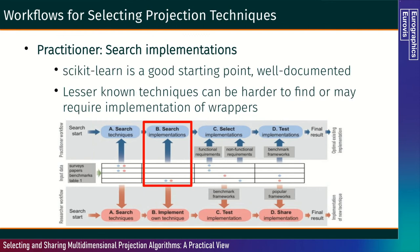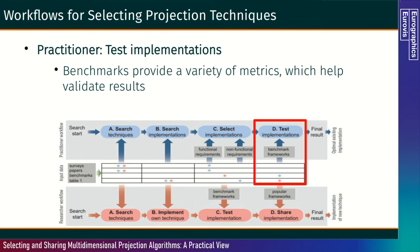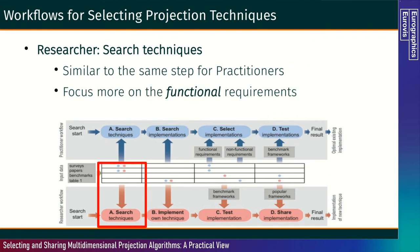Practitioners then search for implementations. Scikit-learn is usually a good starting point — it has many implementations and is very well documented, but lesser-known techniques can be harder to find or may require implementation of wrappers. Then they need to select implementations; surveys provide information to check if requirements are met, though documentation quality ranges from none to great, as do APIs and performance. Then they test the implementations, and benchmarks provide a variety of metrics to help validate results. For researchers, the workflow is a bit different, but the starting point is more or less the same: searching for techniques, with functional requirements being most important.